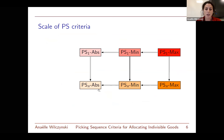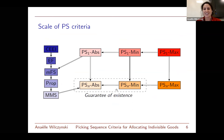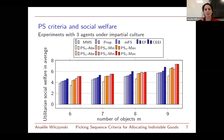We complete the picture with other combinations of worst/best and last/first. The criteria can be related in a scale where PSn-apps is the weakest requirement and PS1-max the strongest, with guaranteed existence. They can also be related to the original scale of fairness. Experimentally, these criteria tend to select quite efficient allocations.